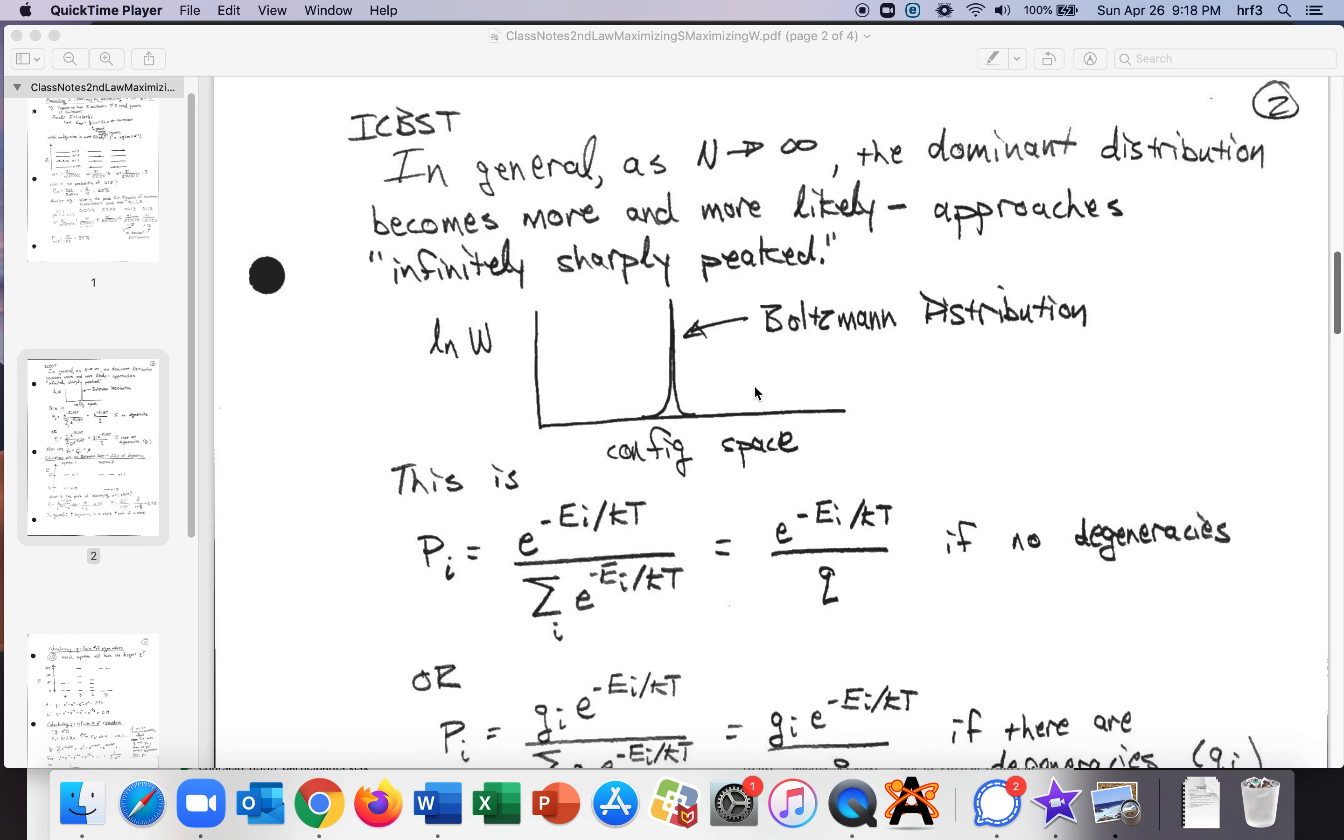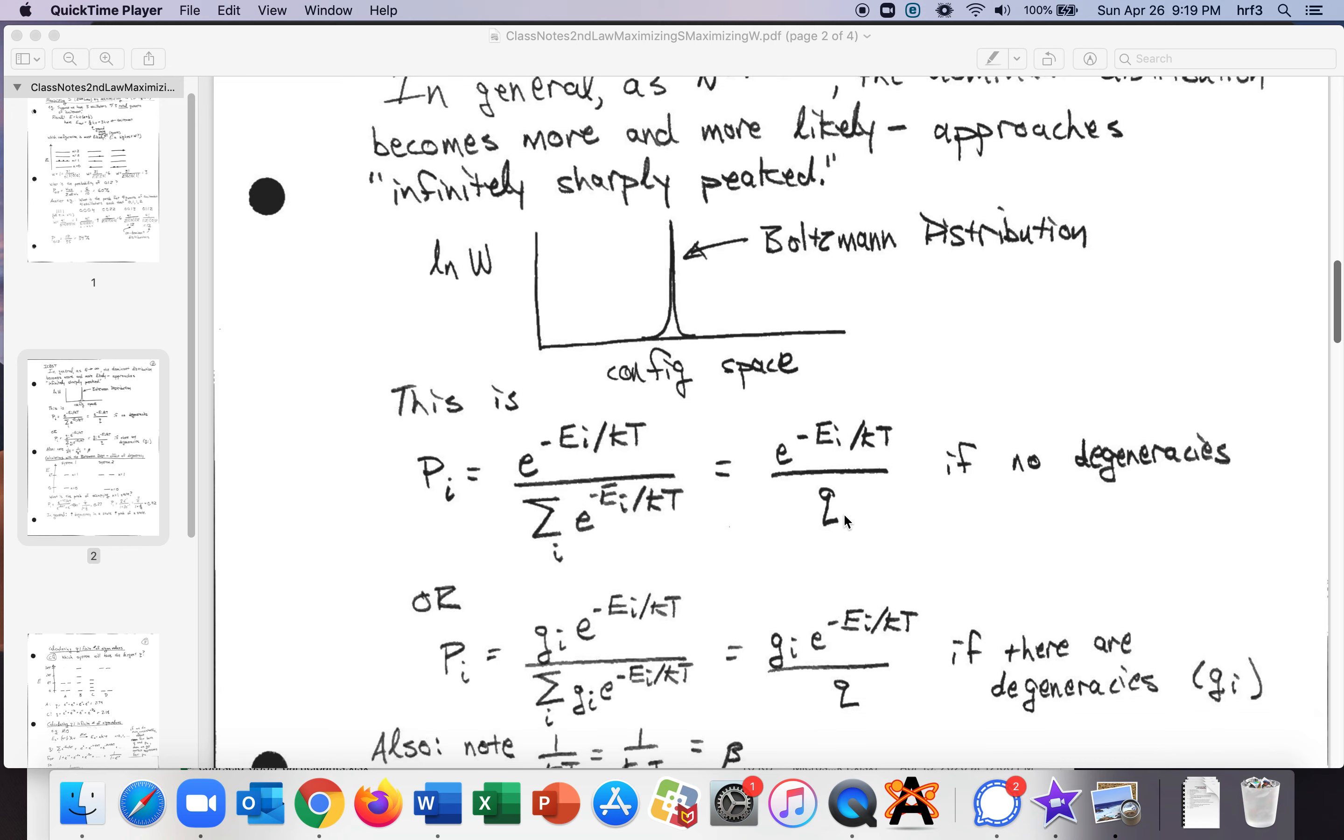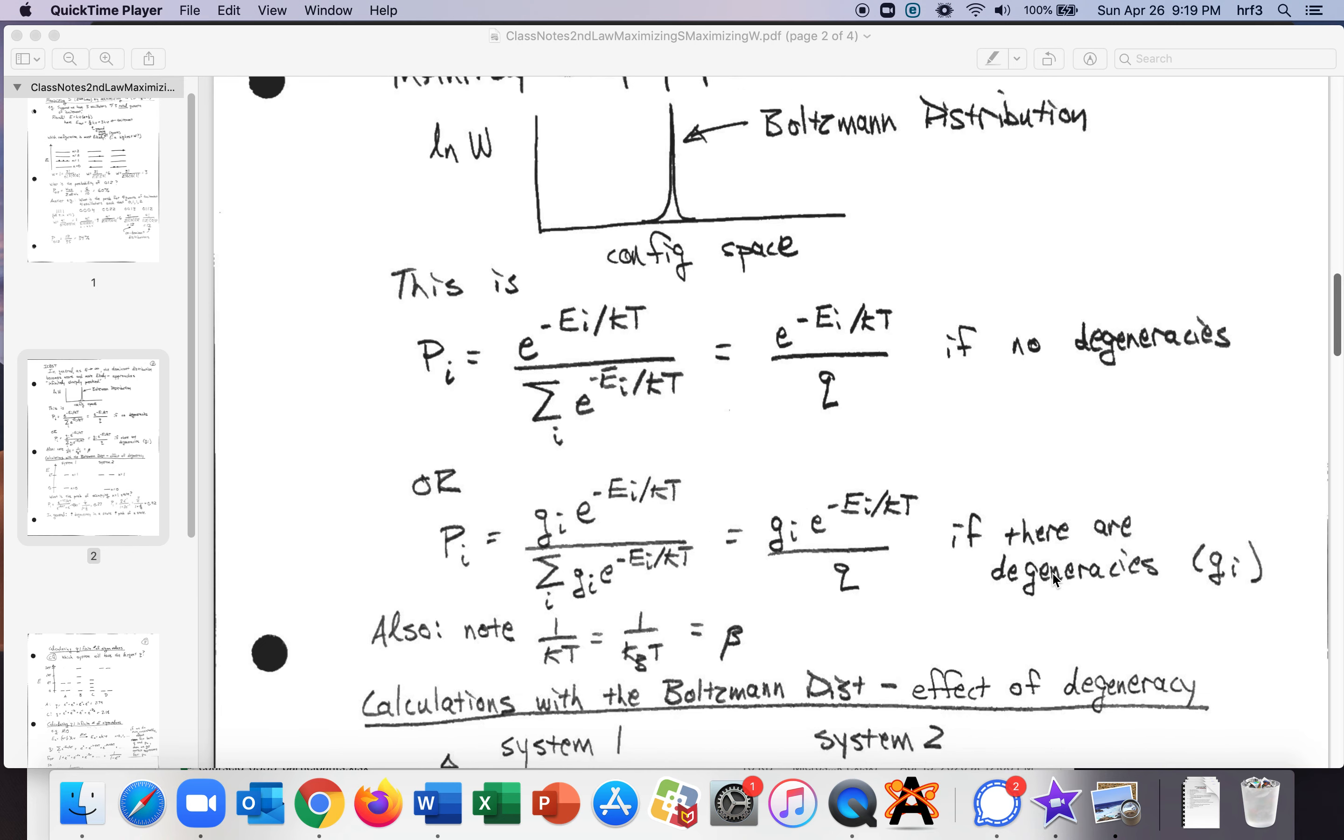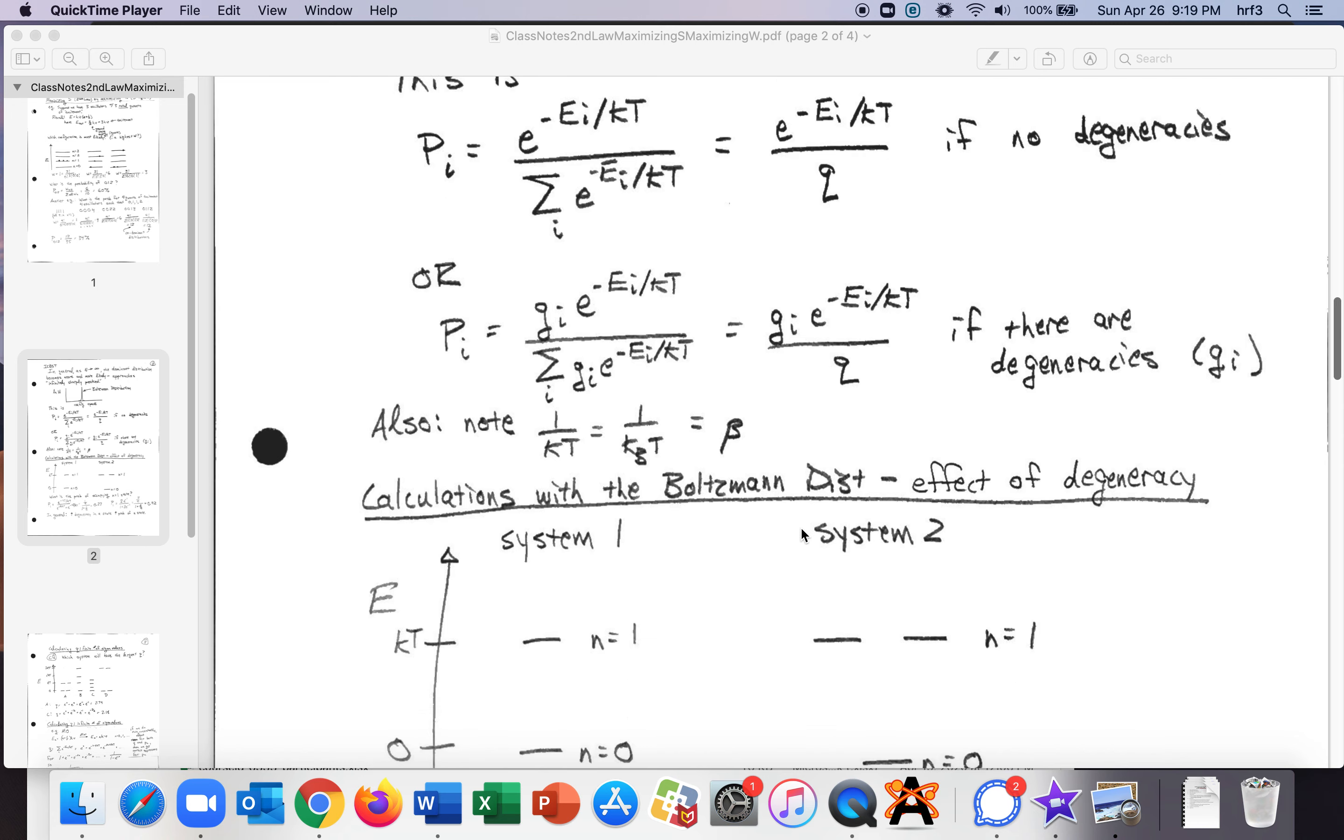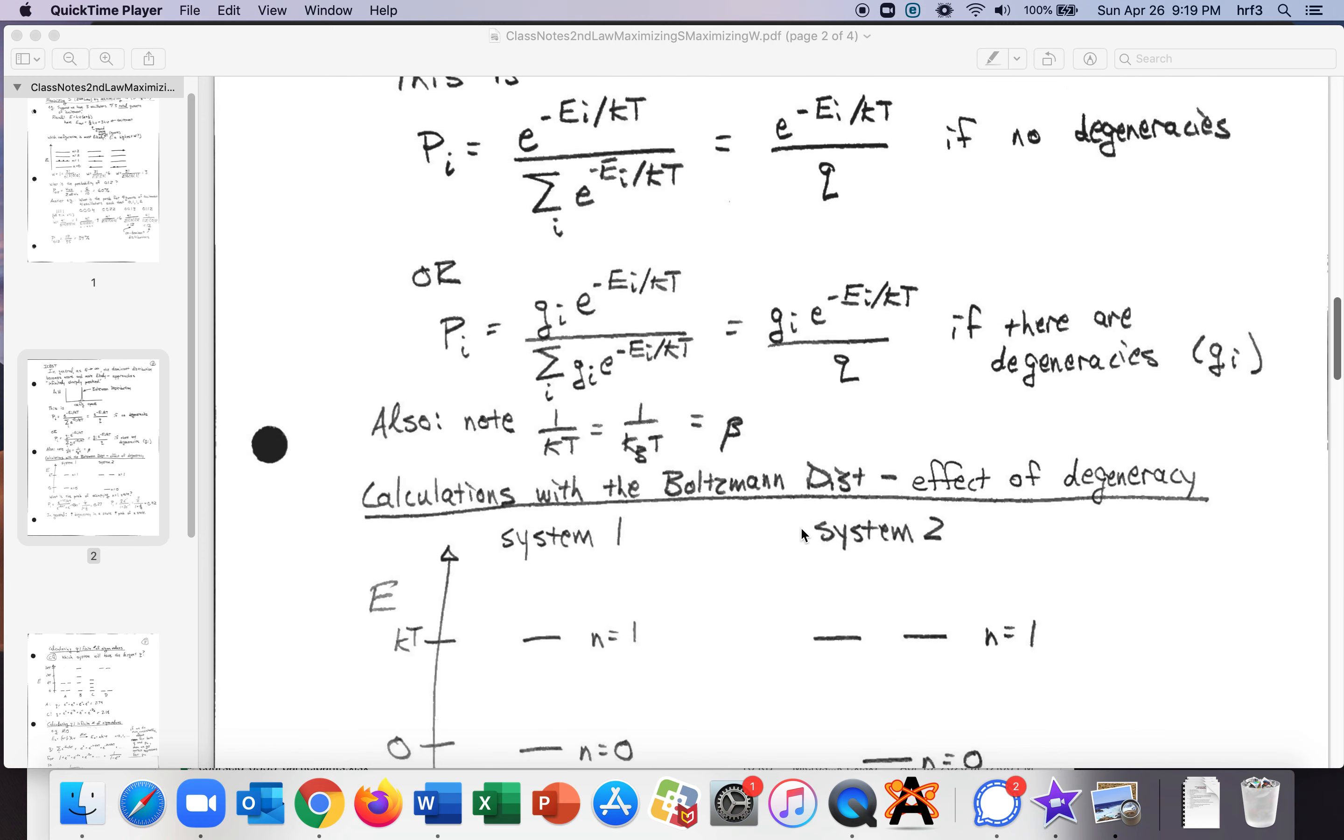So it depends on the energy of the state and then divided by kt and we've seen this before so the probability of being in state i is e to the negative e i over kt over the sum of all the possibilities that's if there's no degeneracies. The denominator is q or if there are degeneracies then we have to throw those in there. Also in your textbook they use beta a lot beta is just one over kt or kbt that where k is or kb is the Boltzmann constant.